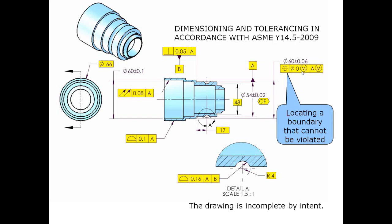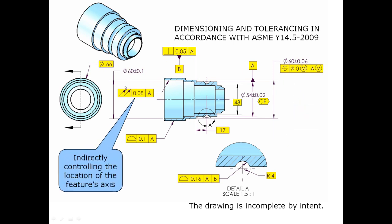Here I have a position tolerance. And this would have been locating or controlling the axis of this cylinder if I hadn't added the maximum material condition modifier. Now this is saying there is a boundary that the surface cannot violate because I probably want this to fit down into something.